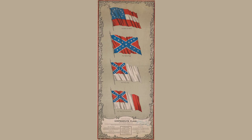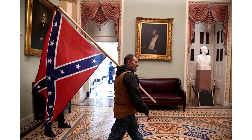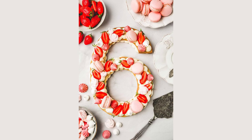Secession and the Formation of the Confederacy. Following Lincoln's election, several southern states seceded from the Union, forming the Confederate States of America. The Confederacy was formed with the goal of preserving slavery and states' rights.